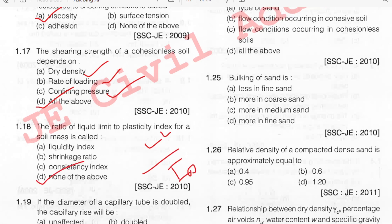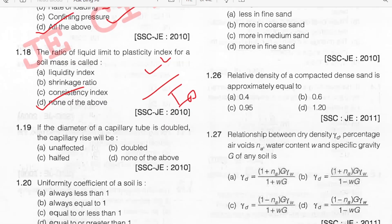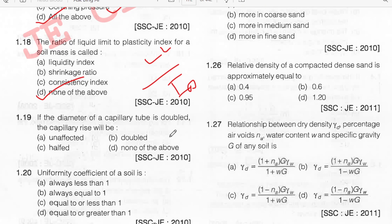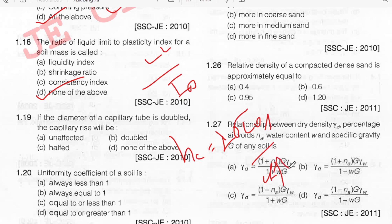If the diameter of a capillary tube is doubled, what happens to the capillary rise? Using the formula: capillary rise = 4σ·cosθ / D. Since capillary rise is inversely proportional to D, doubling D makes the rise half. So the answer is half, option C.